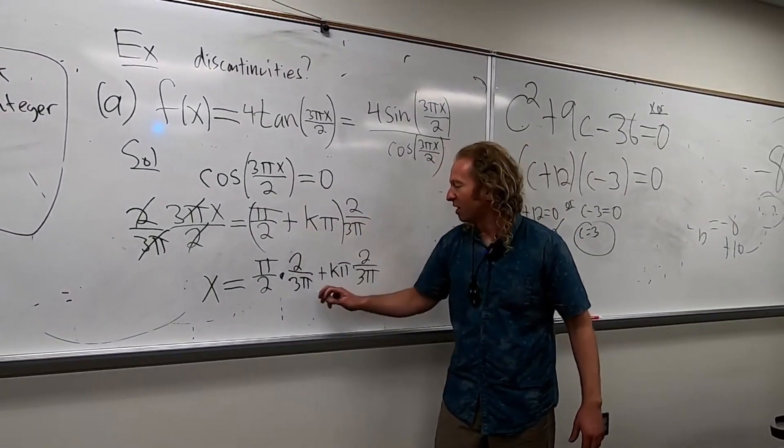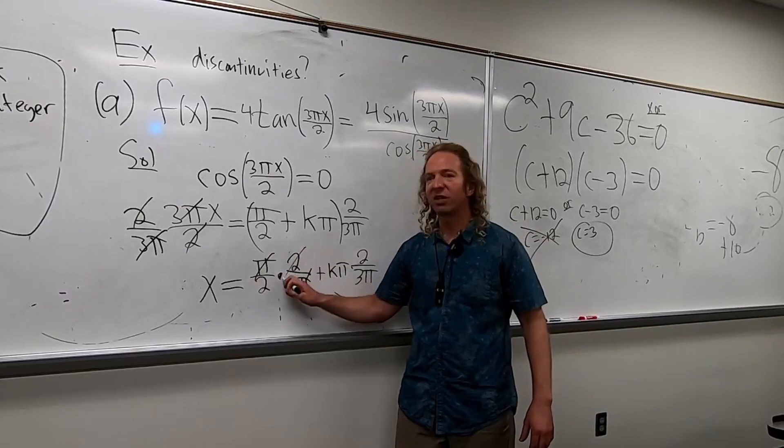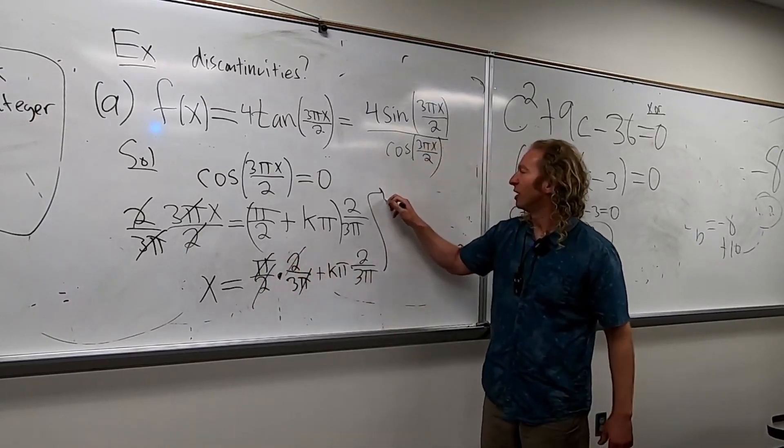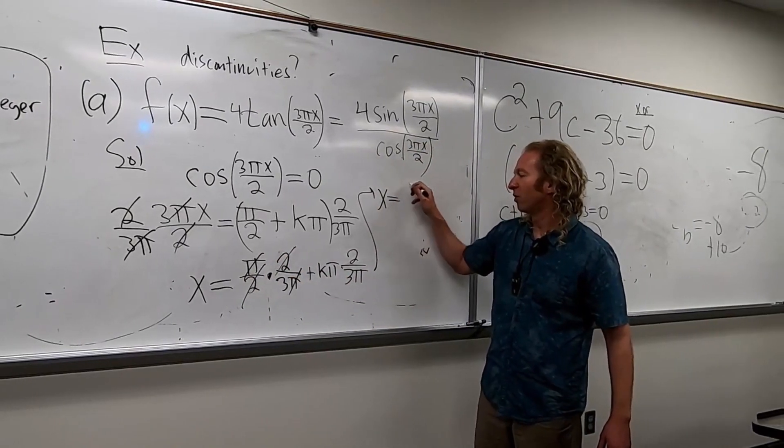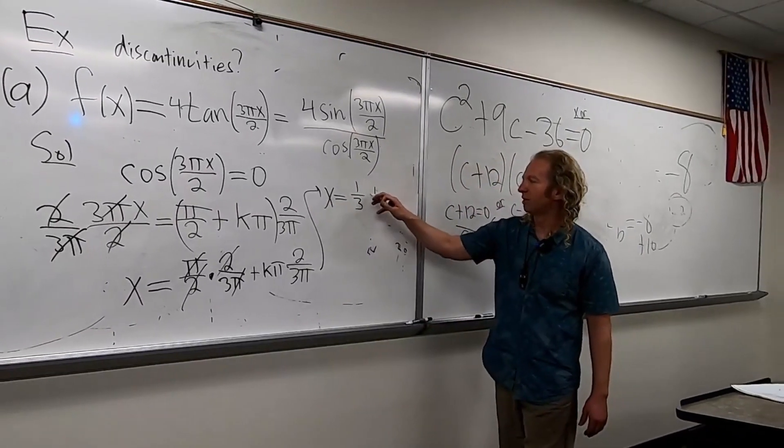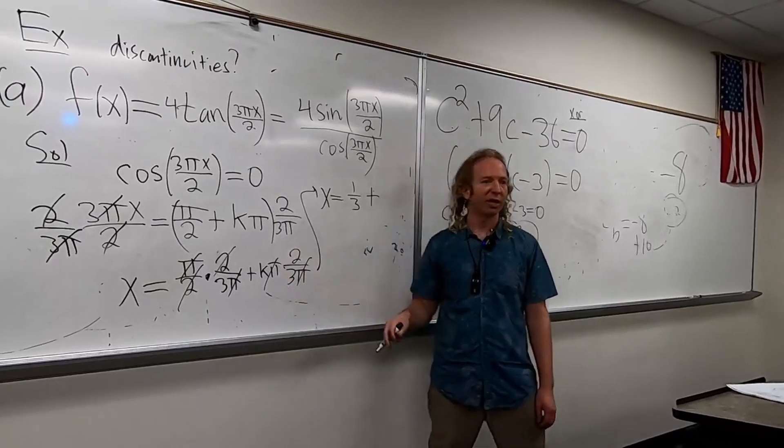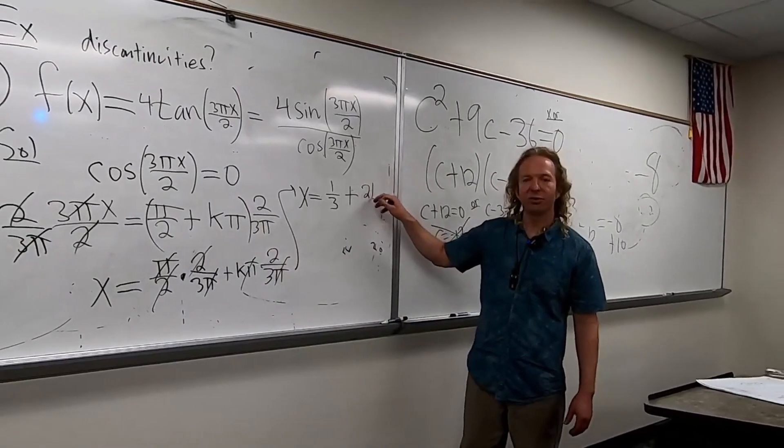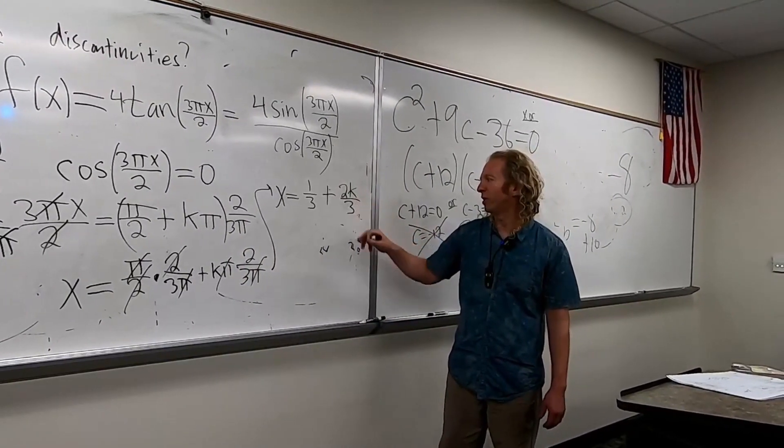So this times this. Plus this times this. The pi's cancel. The 2's cancel. Right? So you get x equals 1 third. Plus... The pi's cancel. So you get... 2k over 3. Very good. 2k over 3.